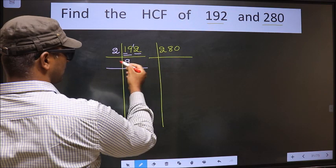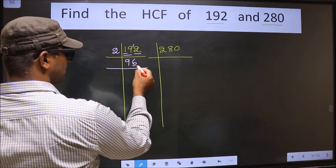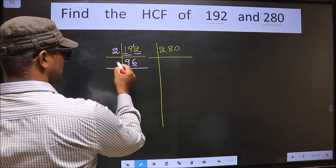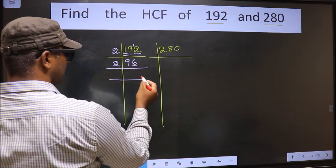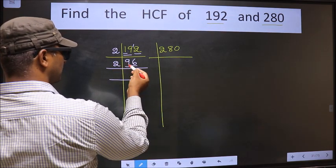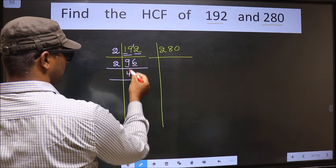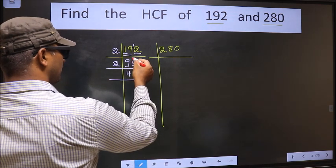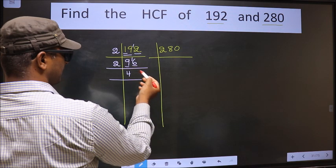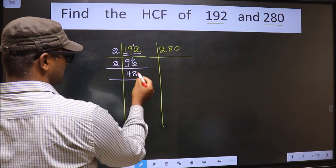When do we get 12 in the 2 table? 2 times 6 is 12. For this number, last digit 6, even, so we take 2 here. The first number is 9; a number close to 9 in the 2 table is 2 fours, 8. 9 minus 8 is 1, carried forward making it 16. When do we get 16 in the 2 table? 2 times 8 is 16.